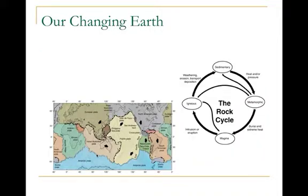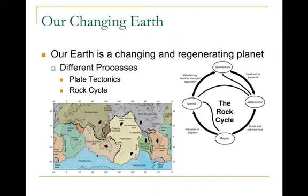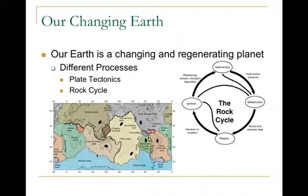The earth is always changing in two big ways. First, continents move — Australia, Africa, Europe are all moving at about the speed your fingernails grow. Second, there's the rock cycle, which converts one type of rock to another. For example, basalt can be weathered down into sand, which becomes sandstone, and sandstone can eventually be converted back into lava and become something like basalt again.